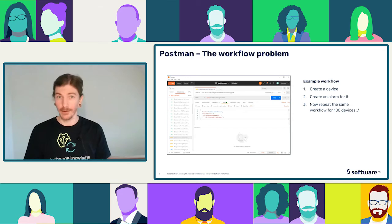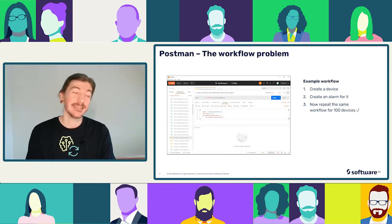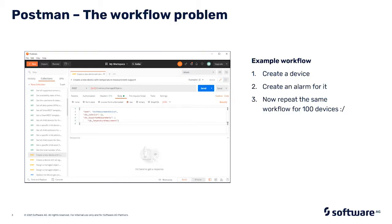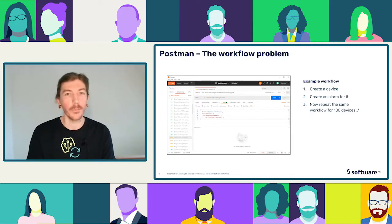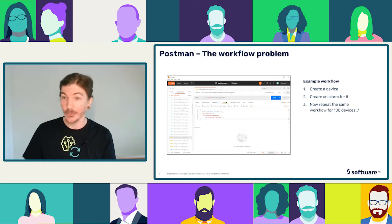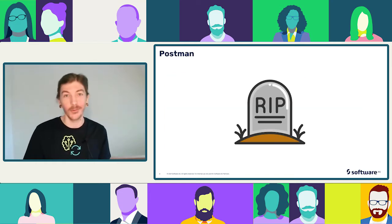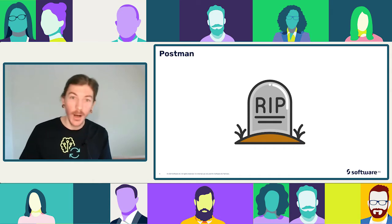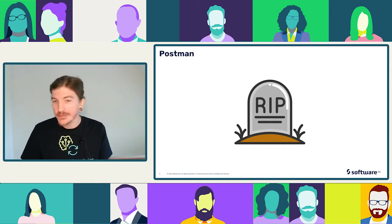For example, we want to create one device — easy, one command, all good. Let's create an alarm for it. Still not so bad, but I still have to copy the device ID to the alarm before I create it and put it in the body. Let's extend that: do 100 devices, because I don't think anyone's wanted to create one device in their life. Repeating the same workflow in Postman for 100 devices just doesn't scale. And then a colleague might ask you to redo it on another tenant — and you can't. Sorry, Postman. It's good for beginners and UI people, but for professionals it's just not good enough.